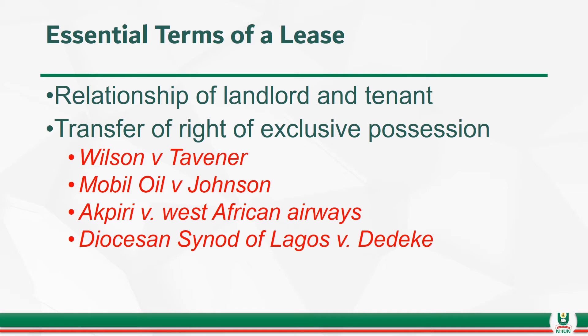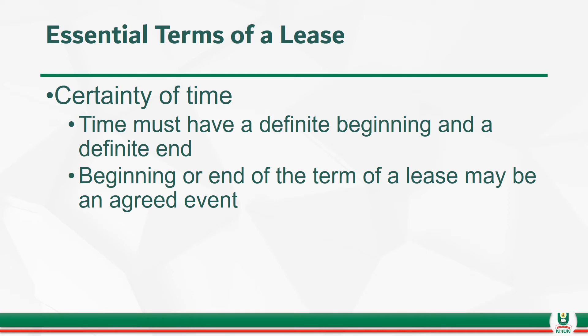And if you look at the case of the Ossetian Synod of Lagos v Dedeke, a vicar was allowed to stay in the quarters. However, there was no proof that he was paying rent, and there was no proof that he had the right of exclusive possession. Because of this, the lease relationship was not deemed to exist. Other essential terms include certainty of time — it must be clear when the lease begins and when it ends. That's what we had in Mobile Oil v Johnson.